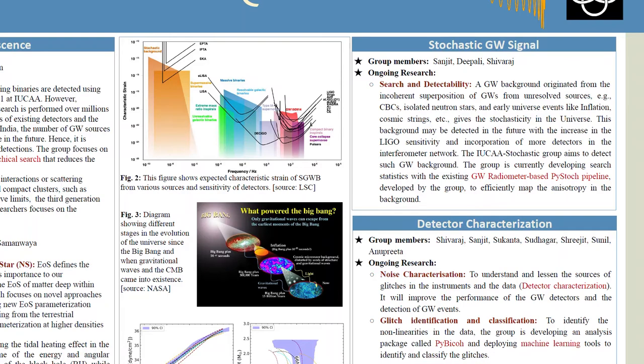What we can do is we can correlate the noise in the two detectors or if you have more detectors, and these noise should be correlated because this gravitational wave signal is coming in all of those detectors. In this way we can measure the anisotropy in this gravitational background signature which may give us some clue about the structure formation of the early universe as well. The group is currently developing a search statistics with the existing GW radiometer based pi stock pipeline which was also developed by the group to study the anisotropy in the background.